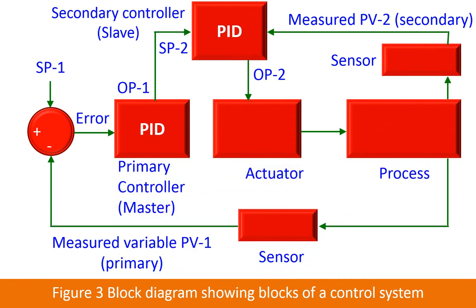The cascade control concept is illustrated in this block diagram. There are two controllers: a primary controller and a secondary controller. The output of the first controller OP1 is used as set point SP2 of the secondary controller. The primary controller is called the master and the secondary controller is called the slave. The slave follows the master.